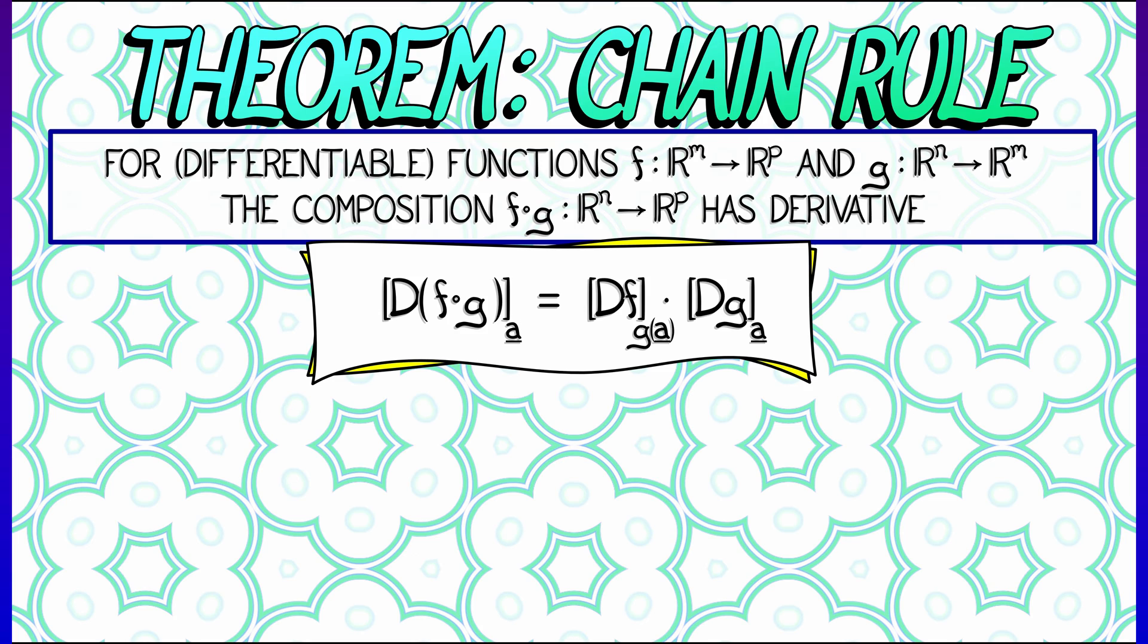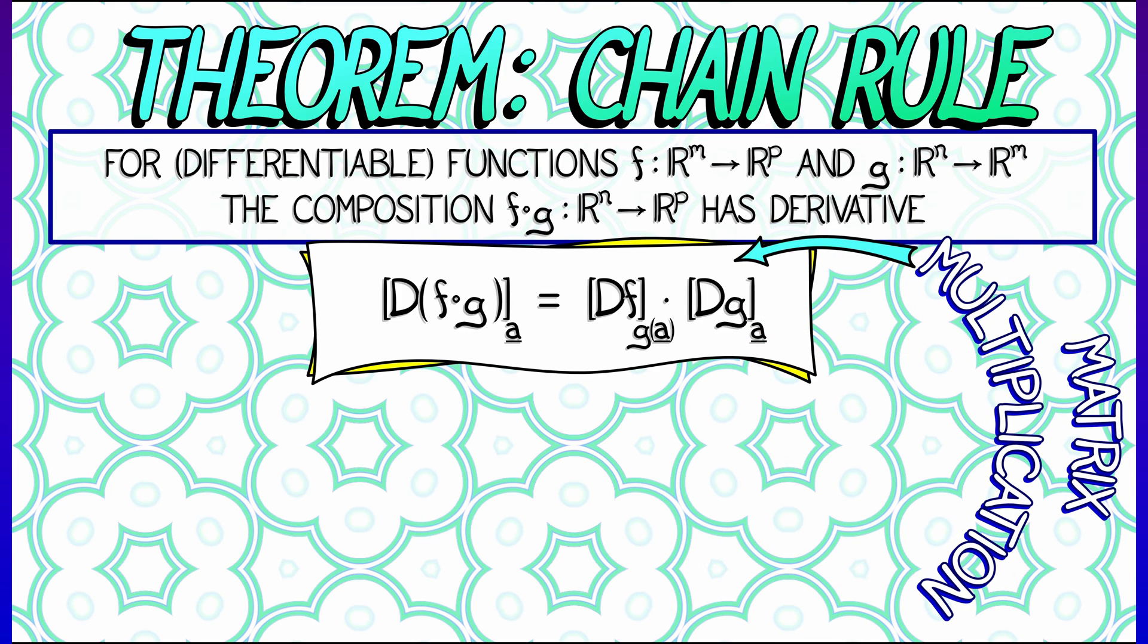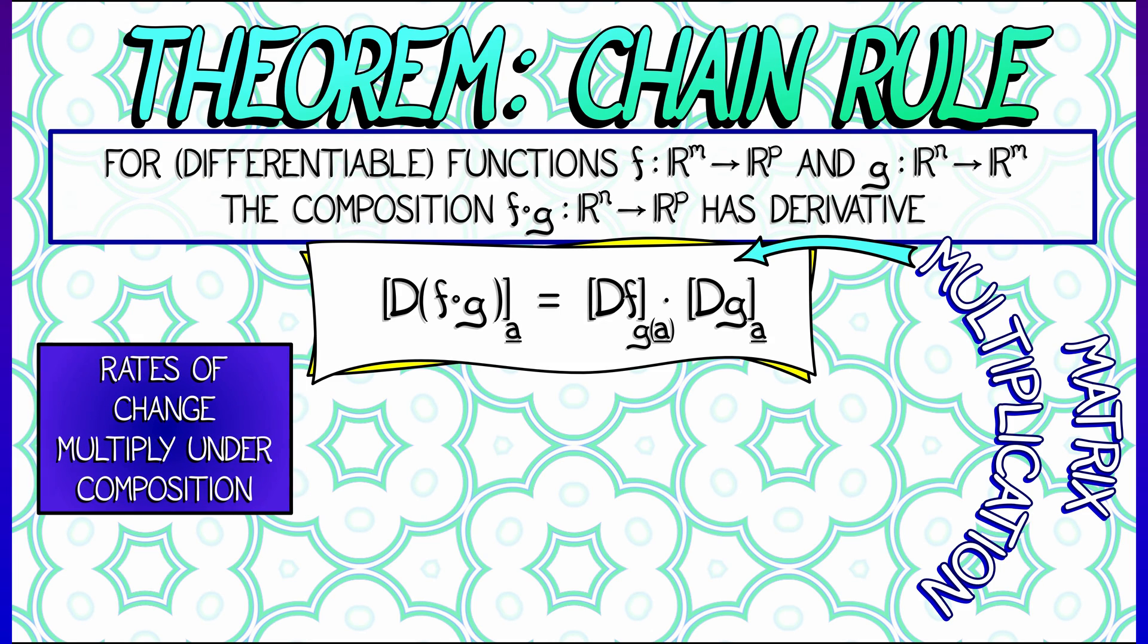What is this multiplication between derivatives? Oh wait! This is matrix multiplication, because of course, these derivatives are matrices. This is what it has to be. Rates of change multiply under composition, and now we have matrix multiplication to do the hard work.